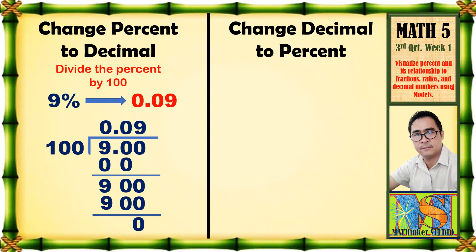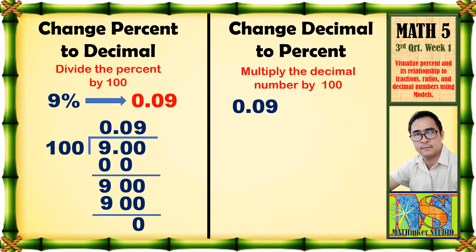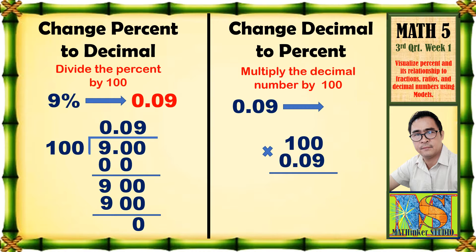Next: Change decimal to percent. Baliktad naman natin ngayon. Paano ba gawin ito? Multiply the decimal number by 100. So, 0.09 — change to percent form. Sabi nga, multiply natin ng 100. So, 100 times 0.09 is equal to — let us multiply. Zero times 9 is equal to zero. Then, let us proceed to the next number.